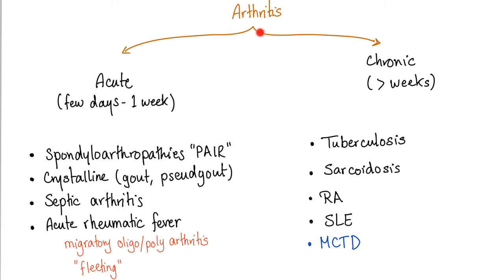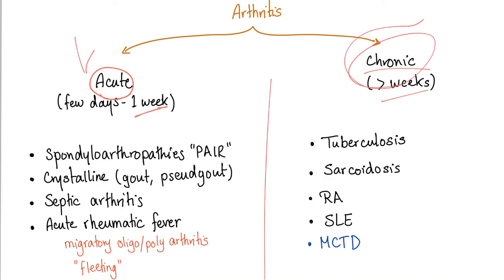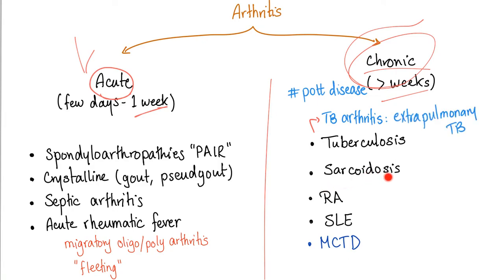Depending on the chronicity of arthritis, we can divide it into acute and chronic. Acute means a few days — yesterday, three days ago, one week ago. Chronic means four weeks or more — three months ago, that's chronic arthritis. Examples of acute arthritis: spondyloarthropathies (PAIR — psoriatic arthritis, ankylosing spondylitis, IBD arthritis, reactive arthritis), crystalline arthritis such as gout and pseudogout, septic arthritis, and acute rheumatic fever (which is migratory oligo- or polyarthritis, also known as fleeting arthritis). Chronic examples include tuberculosis, sarcoidosis, rheumatoid arthritis, lupus, and mixed connective tissue disease.